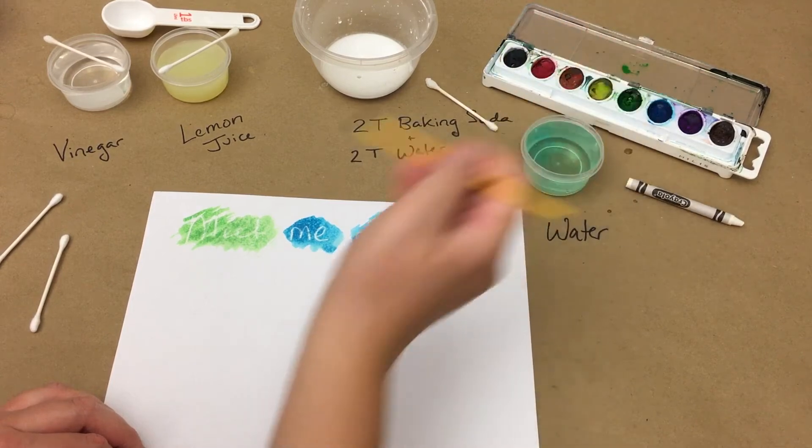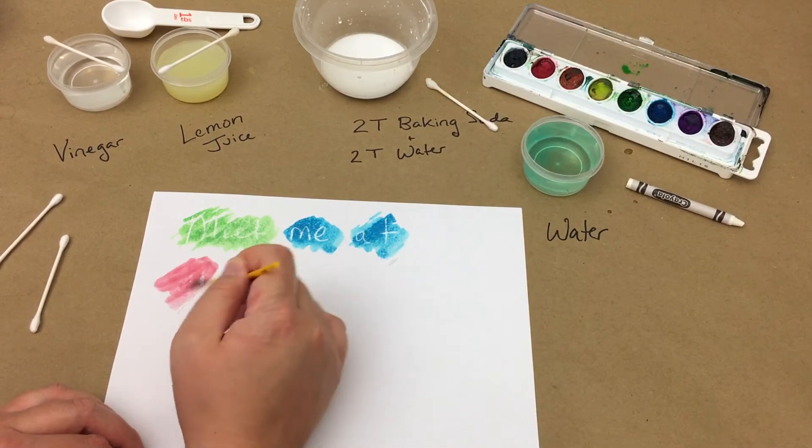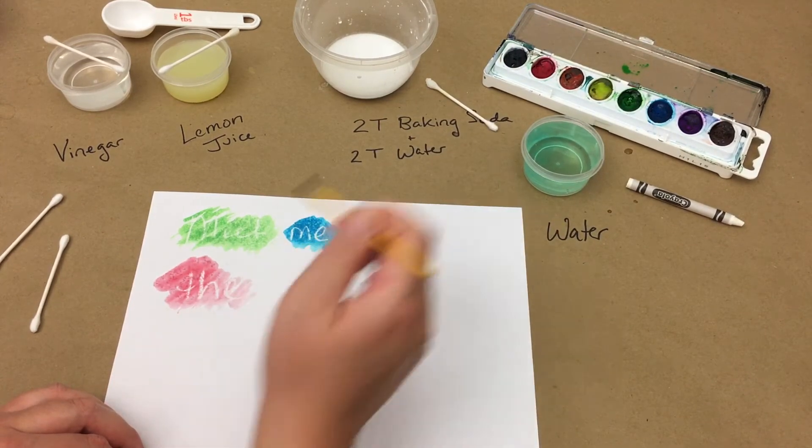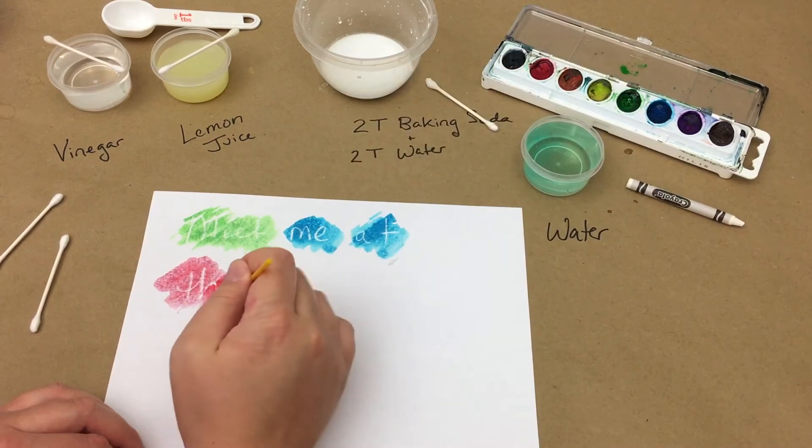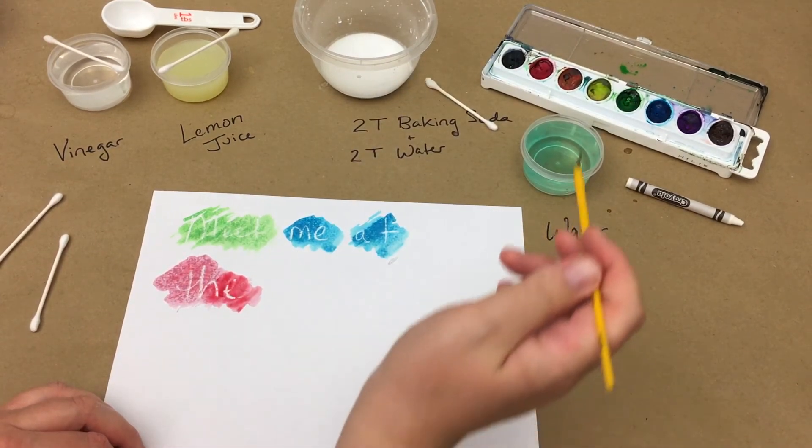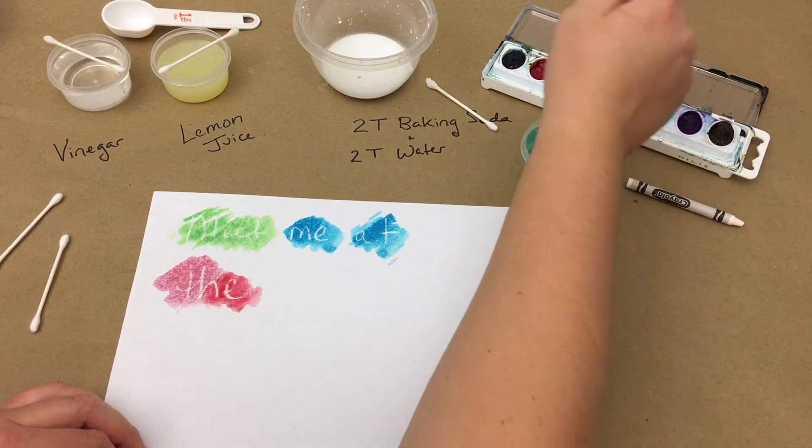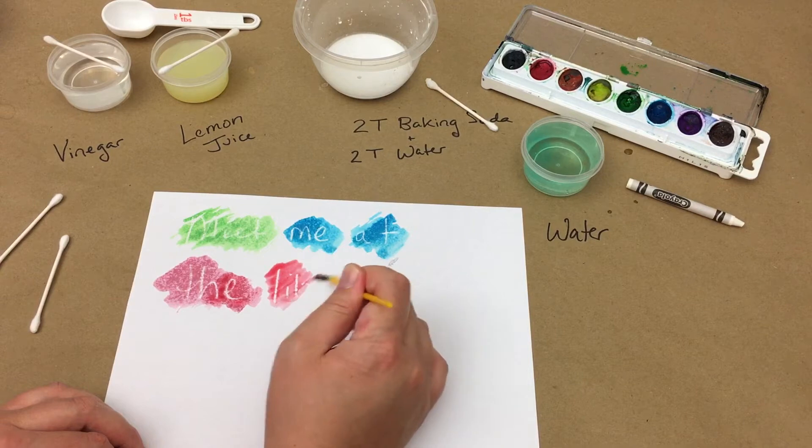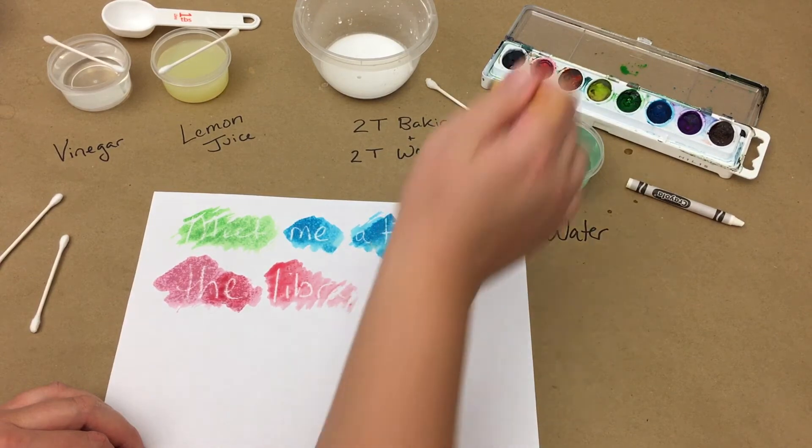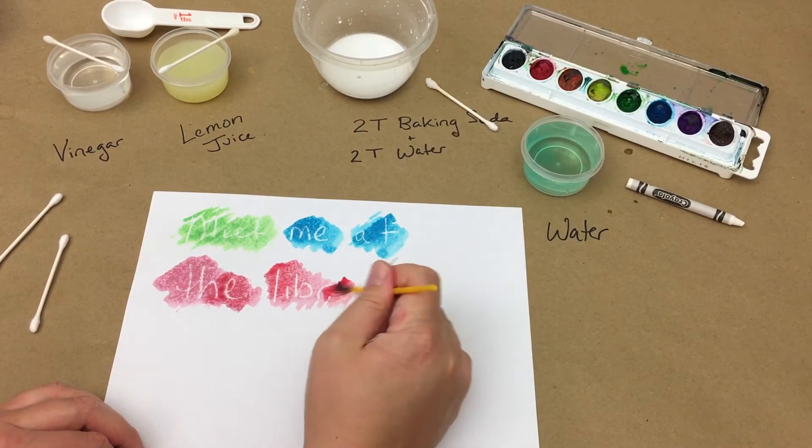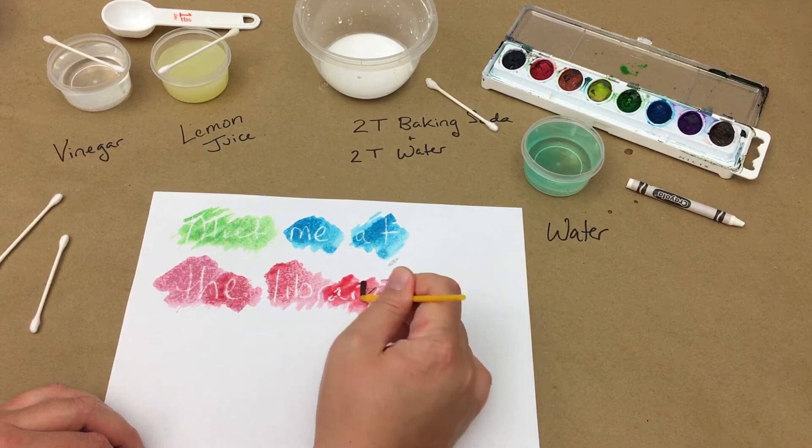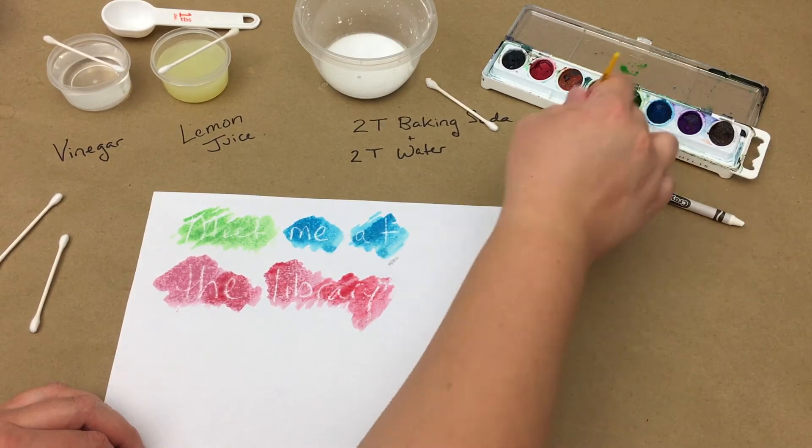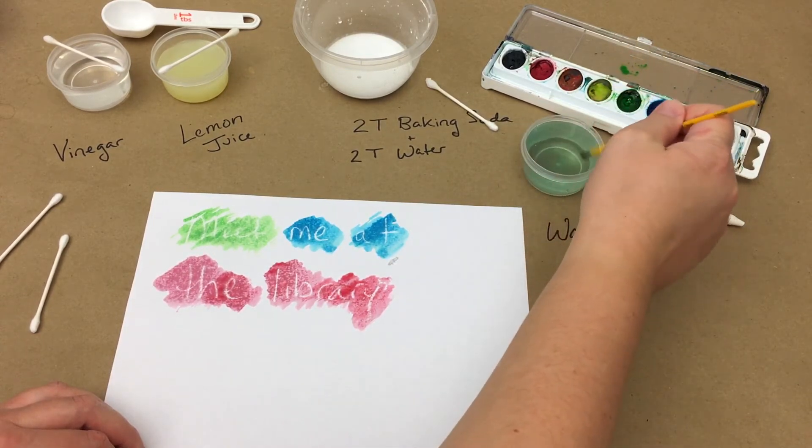Although writing this message did not require any liquids, revealing it does, so these aren't the most efficient messages if you're wanting to immediately hide a message, hang on to it, or store it because you will end up with a piece of paper covered in wet spots. This method also takes a little bit of time because you're going to have to either paint the entire page or paint smaller portions of the page to reveal sections of the message at a time.